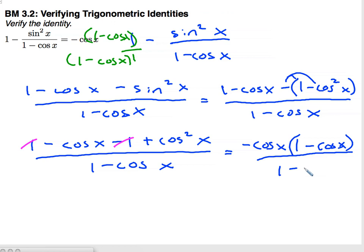And then that is divided by 1 minus cosine x. Since I have 1 minus cosine x on top and 1 minus cosine x on the bottom, those will cancel. And I am left with negative cosine x equals negative cosine x. There's my verification.